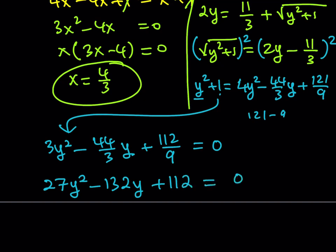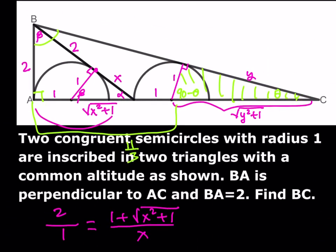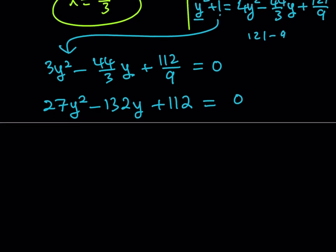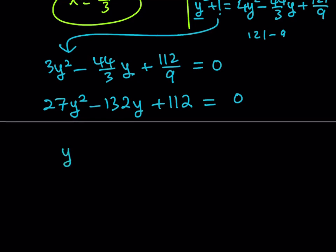Now we solve for y using the quadratic formula: y equals negative b plus or minus the square root of b squared minus 4AC, all over 2a, which is 54. These numbers are large, so let's simplify. The prime factorization of 132 is 2² times 3 times 11. And 112 is 2⁴ times 7.